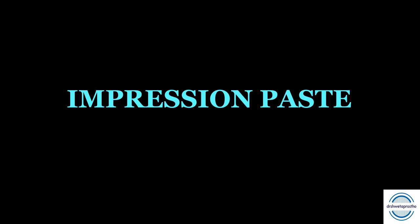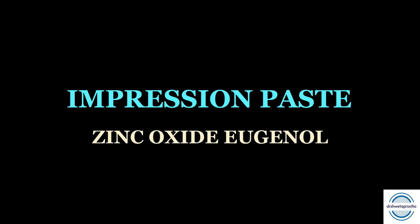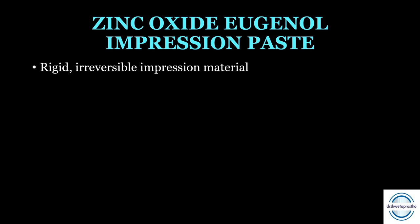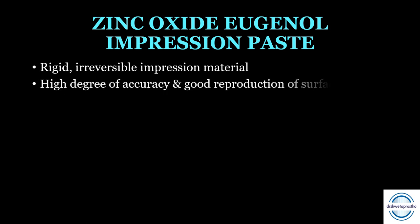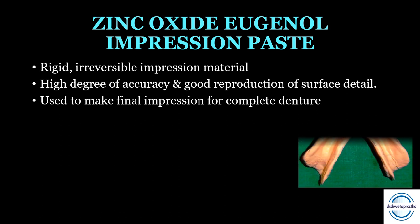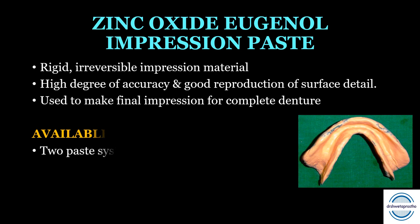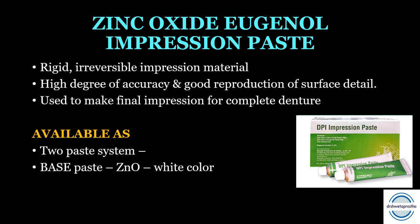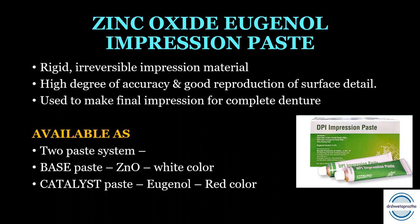The next material is zinc oxide eugenol (ZOE) impression paste. It is a rigid, irreversible impression material — it sets by a chemical change and thus is irreversible. It has a high degree of accuracy and good reproduction of surface detail due to very good flow and low viscosity. It is commonly used to make the final impression (wash impression) for complete dentures. It is supplied as a two-paste system: the base paste containing zinc oxide (white) and the catalyst paste containing eugenol (red).